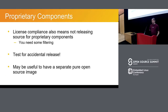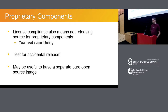License compliance doesn't just mean making sure you've got all the license text and captured all the sources for things that are copyleft. It also means not accidentally distributing the sources for proprietary software. You need some filter — you don't just want to grab every bit of source code that's gone into your image. When you write test cases to make sure you've grabbed the source code, make sure you haven't accidentally grabbed the source code for the proprietary component. I find it useful to have a separate image recipe that produces a pure open source image without those components so that you can do this auditing and comparison.